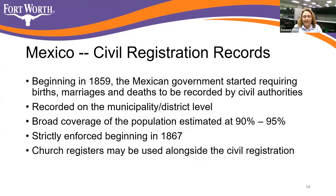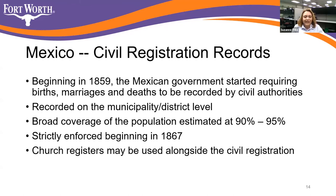What I want to start with today is the civil registration records for Mexico — this is a great place for family research. Civil registration begins in 1859, when the Mexican government started requiring that births, marriages, and deaths be recorded by civil authorities at the municipality or district level. There is very broad coverage of the population, estimated at 90 to 95 percent. The process begins in 1859 and is strictly enforced beginning in 1867, which is when you'll see better to full compliance. You can also use church registers alongside the civil registration.